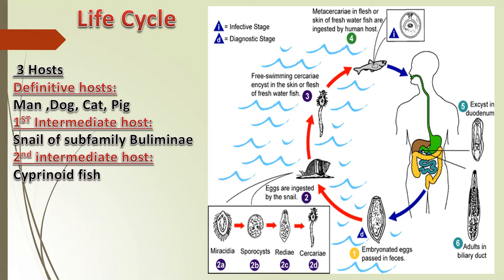The eggs are ingested by the snail, where miracidium, sporocyst, redia and cercaria larval stages are passed. Miracidium changes into sporocyst; sporocyst gives rise to redia; and redia gives rise to cercaria. The cercaria larva, which has a tail, is a free-swimming larva that encysts in the skin or flesh of freshwater fish as metacercaria. The fish is again taken up by humans, and so the life cycle continues.